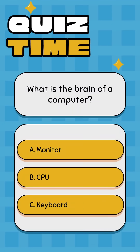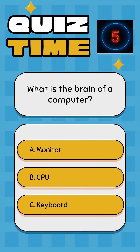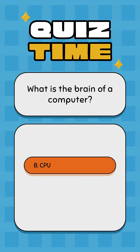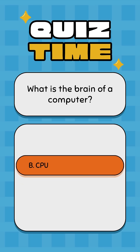What is the brain of a computer? A: Monitor, B: CPU, C: Keyboard. Correct answer: B, CPU.